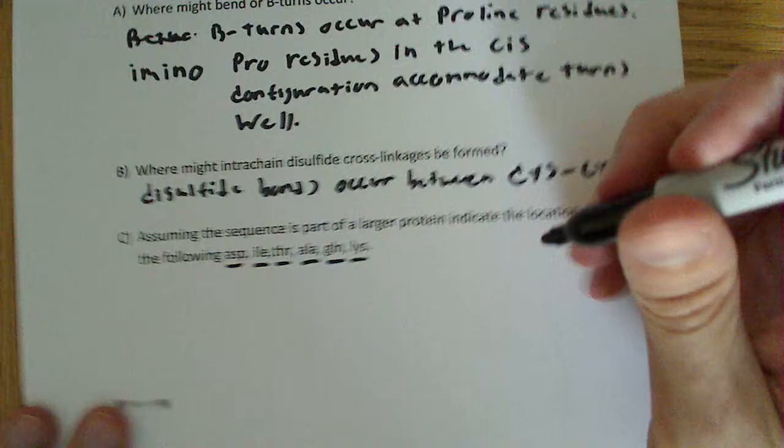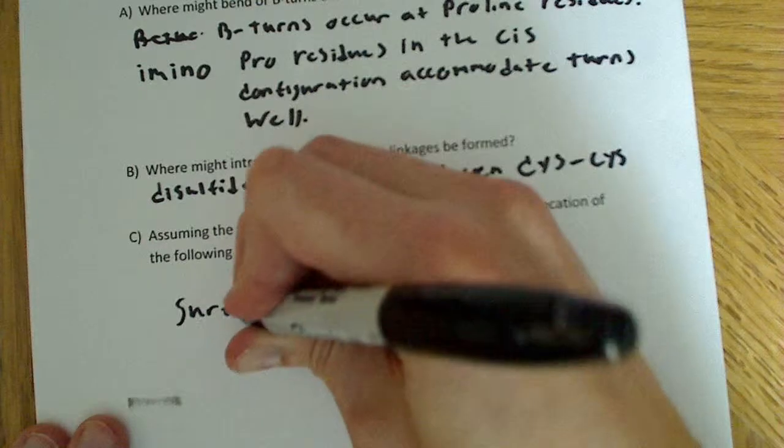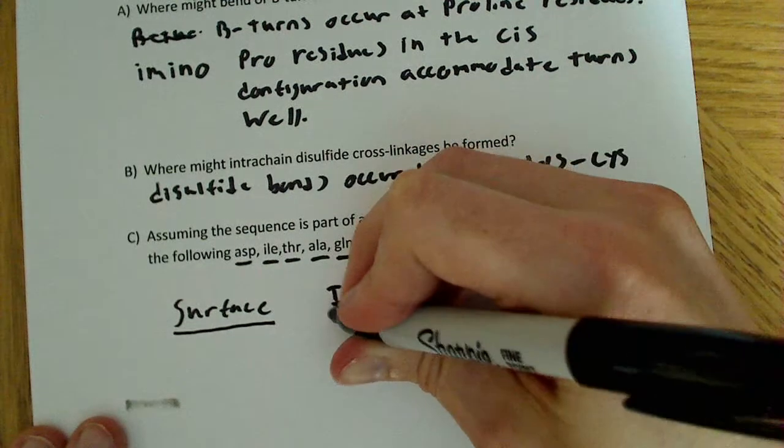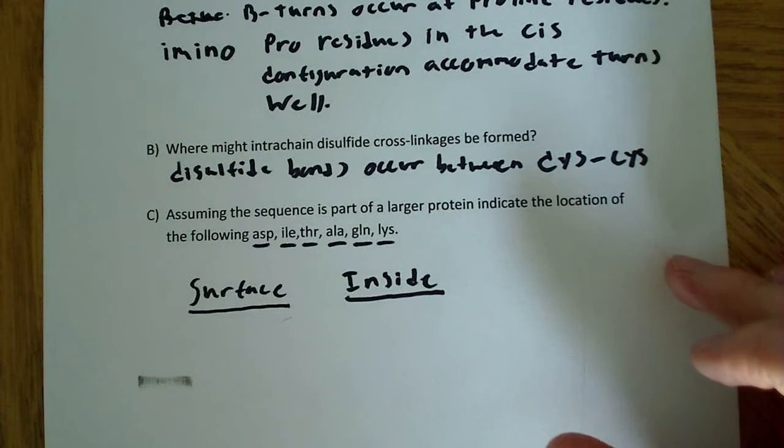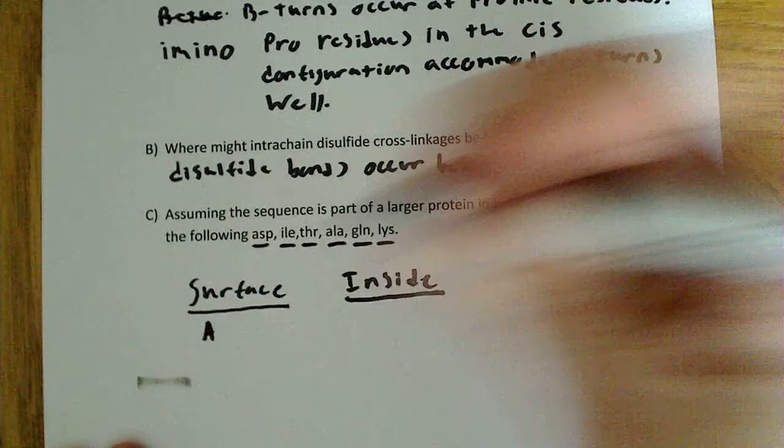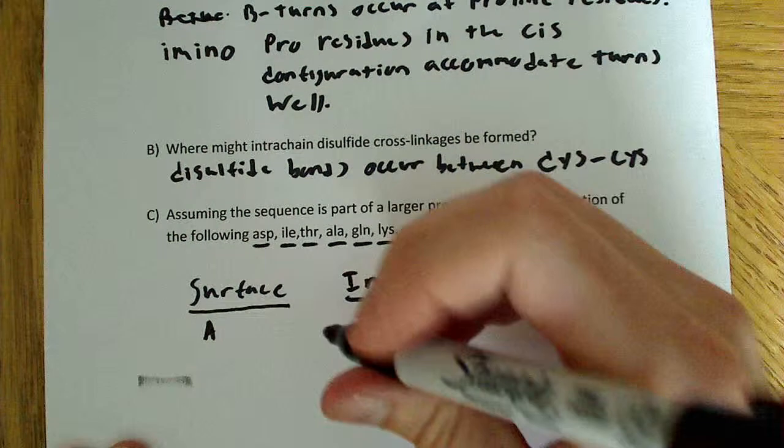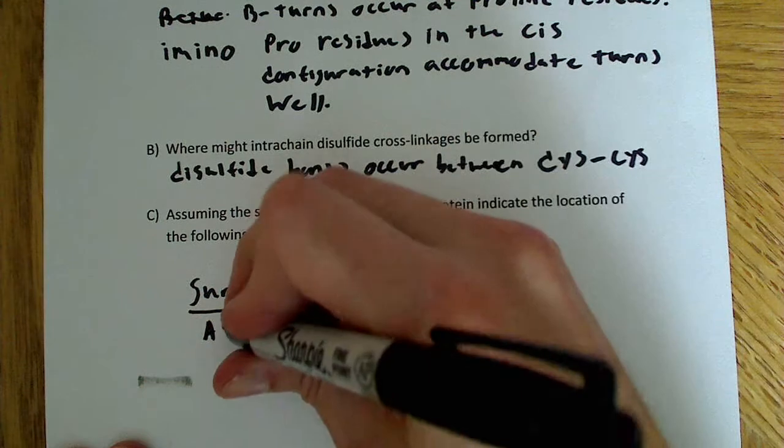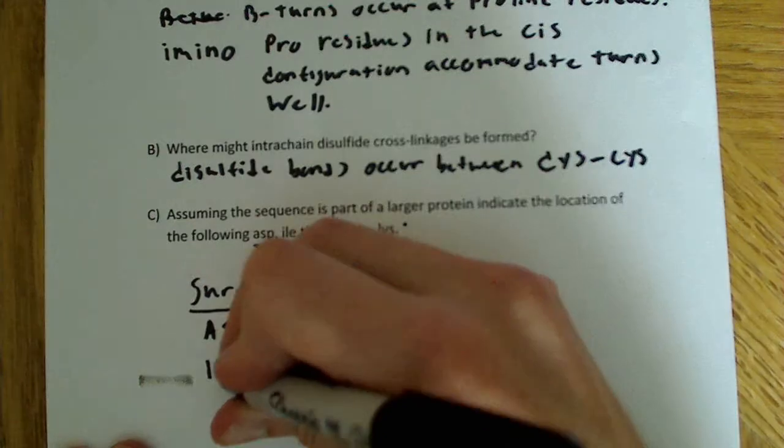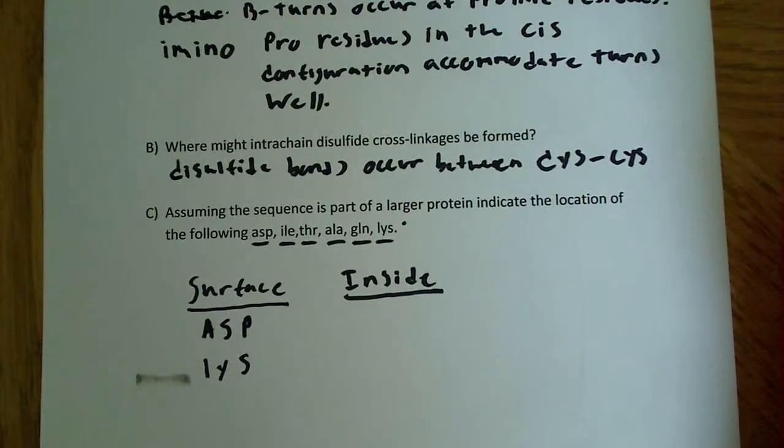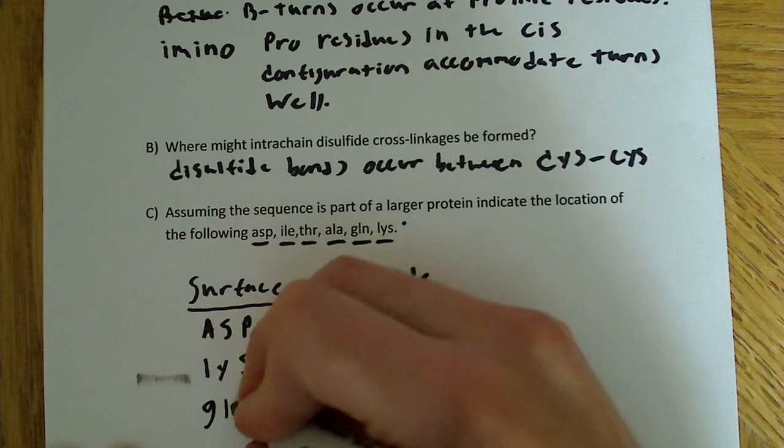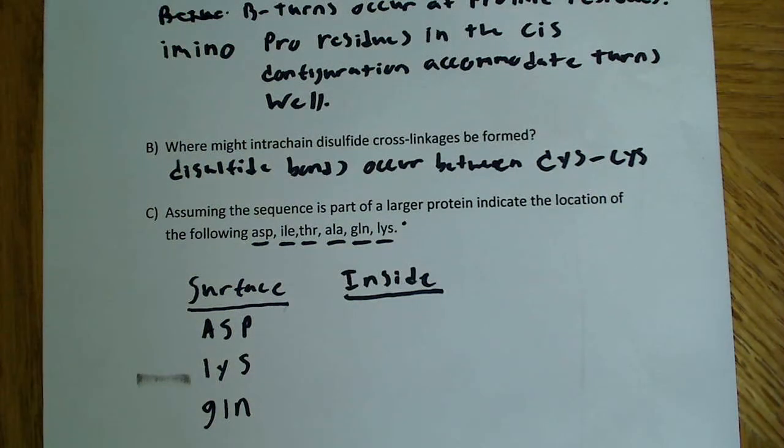So where would these be? All I'm going to do here is say surface for the residues I think would be found on the surface, and inside for the residues on the inside of the protein. The ones that are going to be on the surface - we know they're going to be polar residues and possibly charged. So anything polar and charged, I'm thinking could be on the surface. Aspartic acid is polar and charged, so that's going to be on the surface. Lysine is also polar and charged, so that's also going to be on the surface. Glutamine will also be on the surface because that's polar as well.